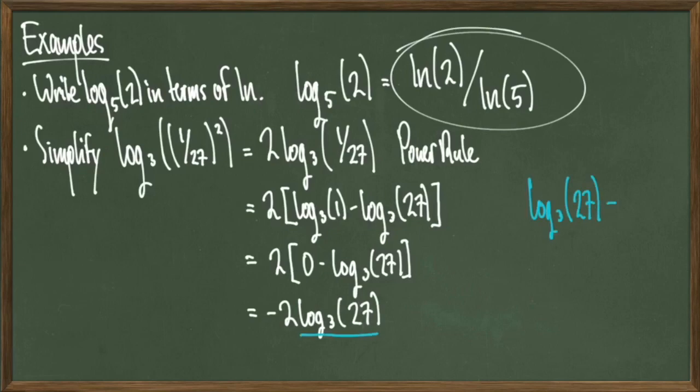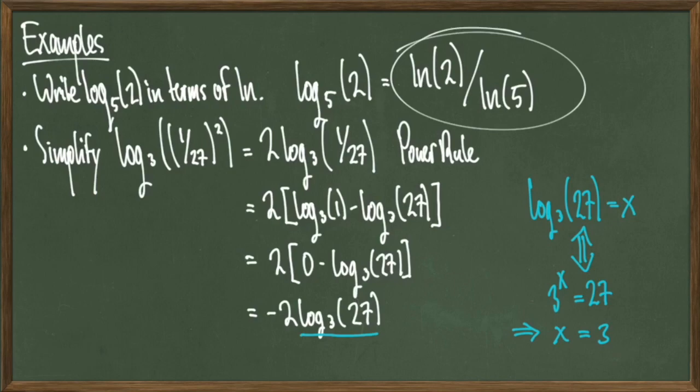Now off to the side, I can actually compute log base 3 of 27. Since log base 3 of 27 can be set equal to x, this means that 3 to the x equals 27, and one can deduce that x should equal 3 because 3 cubed is equal to 27. Therefore, log base 3 of 27 is equal to 3, which means that our final answer simplifies again to negative 6, and we're done.